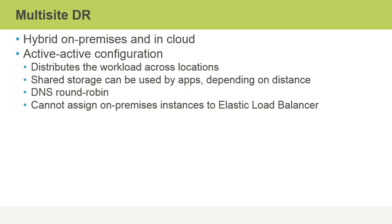However, currently in Amazon Web Services, we cannot assign on-premises virtual machine instances to an elastic load balancer. We can only use elastic load balancing in the cloud for EC2 instances launched in the AWS cloud.